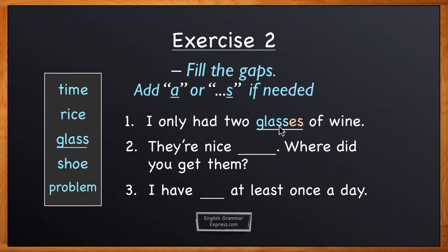Notice also that glass is one of those nouns which takes ES instead of just s in the plural. Sentence number two: They're nice something, where did you get them?